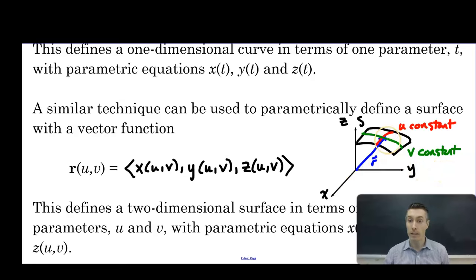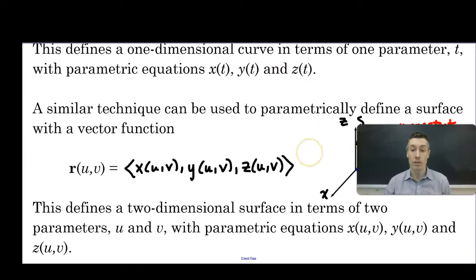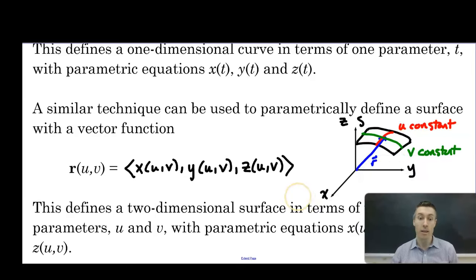So this defines a two-dimensional surface in terms of two parameters u and v, with parametric equations x of u, v, y of u, v, and z of u, v. Surfaces are two-dimensional objects. The way I like to remember that is when we're dealing with surfaces, we often look to find surface area, and area is two-dimensional.